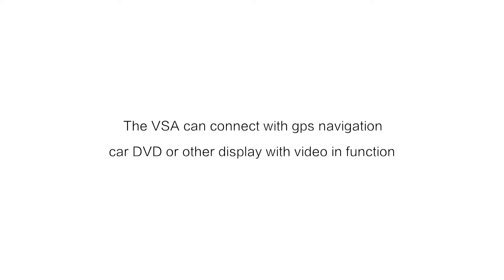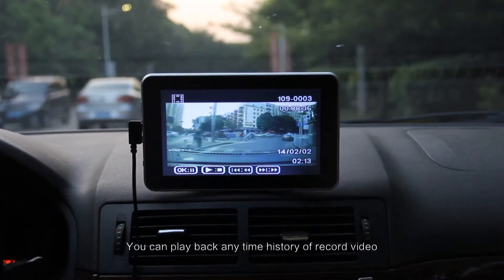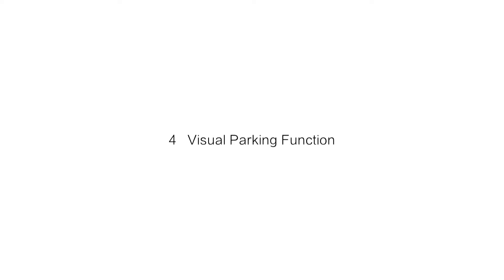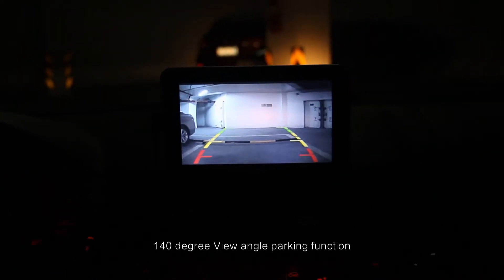The VSA can connect with GPS navigation, car DVD, or other displays with video-in function. The third function is the Digital Video Recorder — you can play back any recorded history video at any time. The fourth function is Visual Parking, offering a 140-degree view angle parking function.